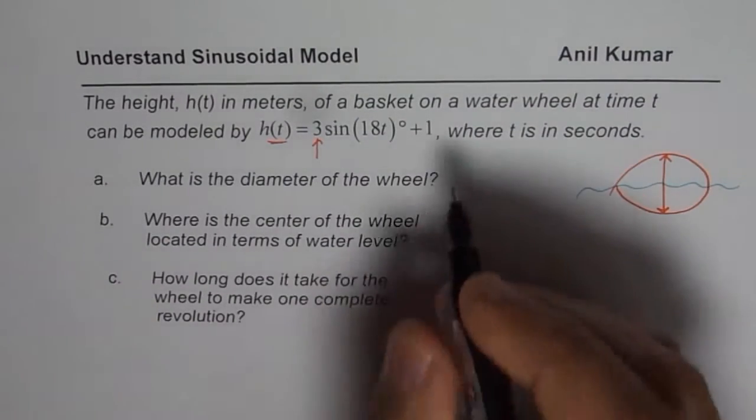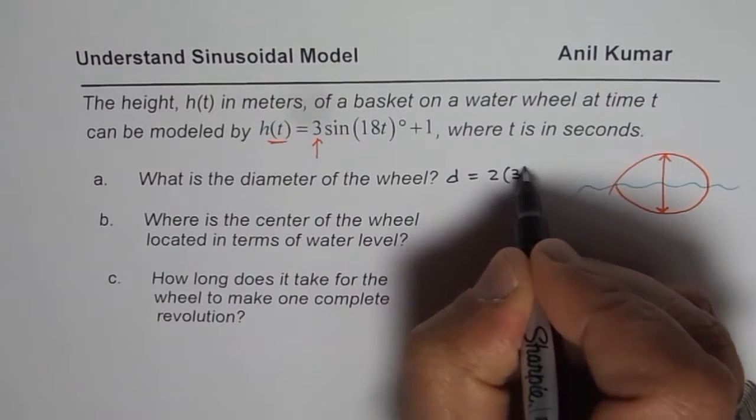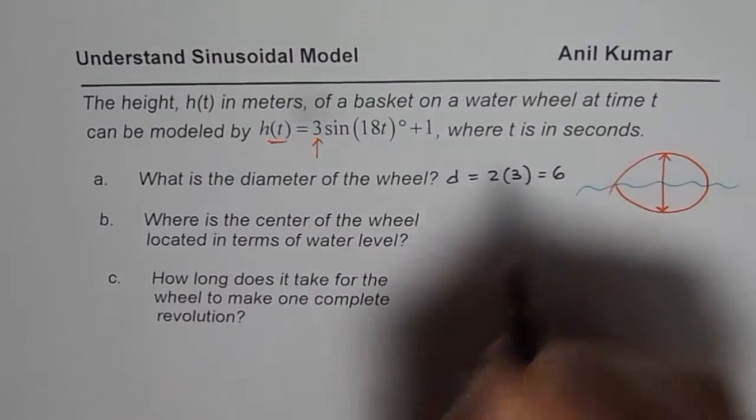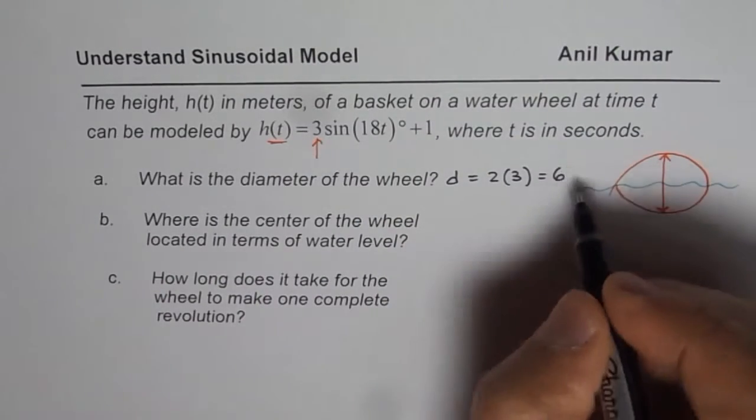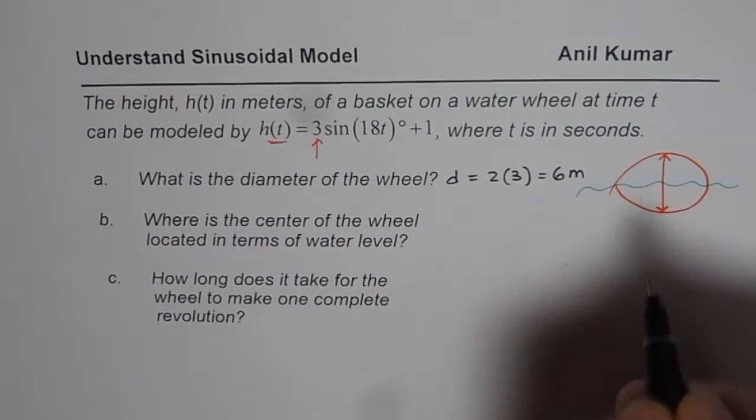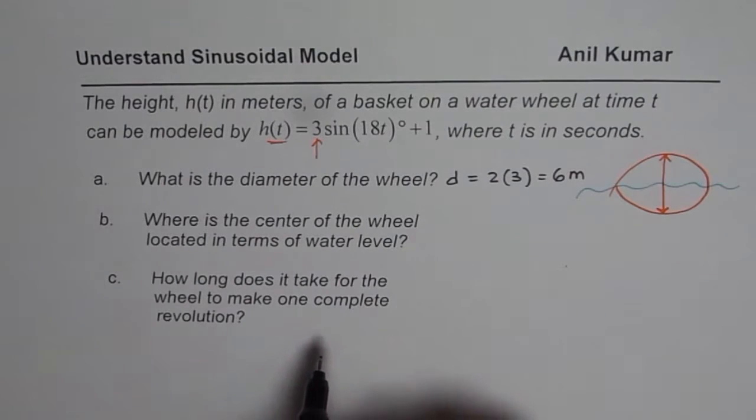So diameter of the wheel will be d = 2 times the radius 3 which will be 6. Since we are given the height in meters, it will be 6 meters. So diameter is going to be 6 meters which you can read directly from the equation.